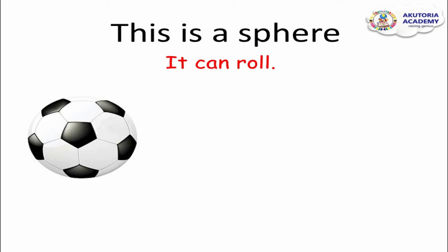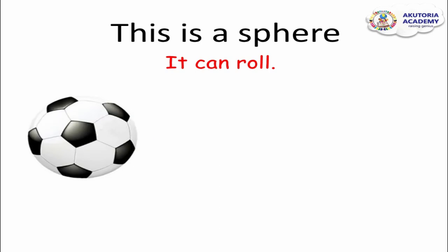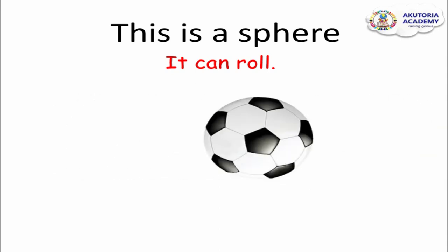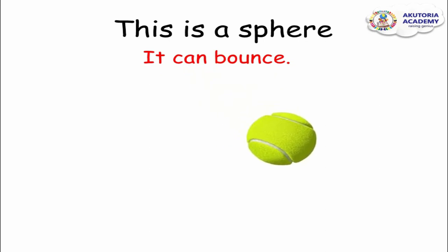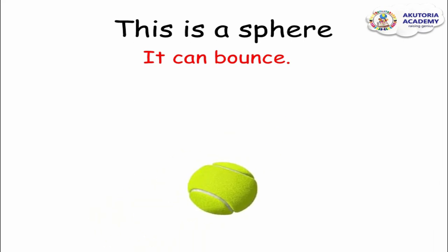Let me show you something else about this sphere. A sphere can roll. The ball is rolling from one side to the other because it's a sphere. A sphere can roll from one side to another. So a ball has the shape of a sphere. A ball is a sphere, and that is why it can stand on its own — it is a solid shape.